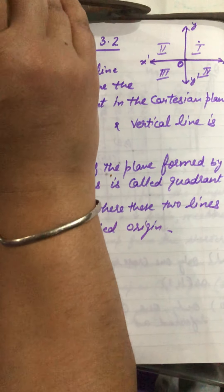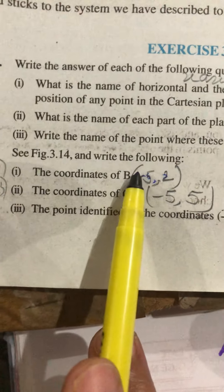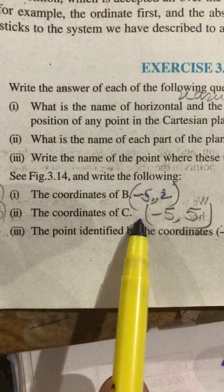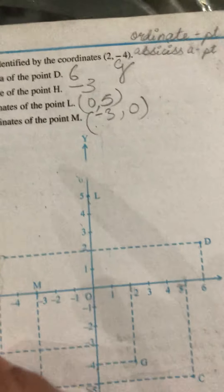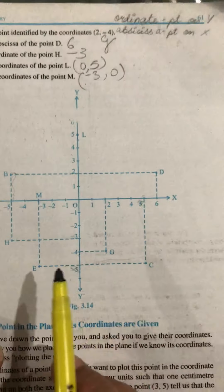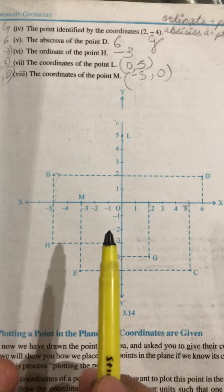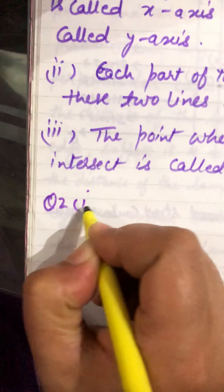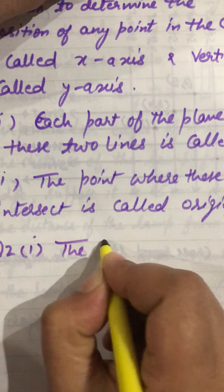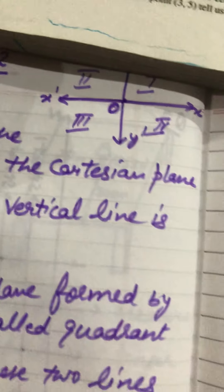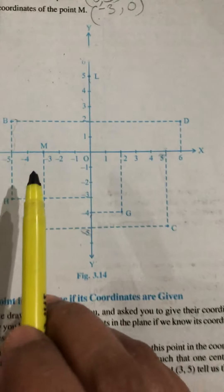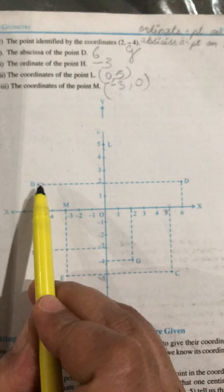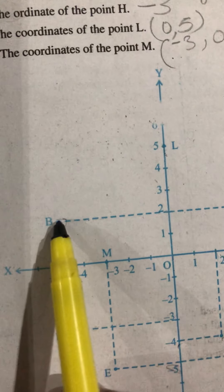This completes question number one. Now, question number two: see figure 3.14 and write the following. The first part asks for the coordinates of point B. In this graph, we need to identify where B is located and determine its coordinates.